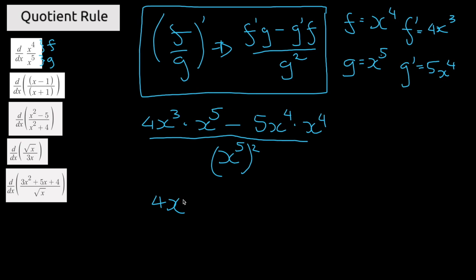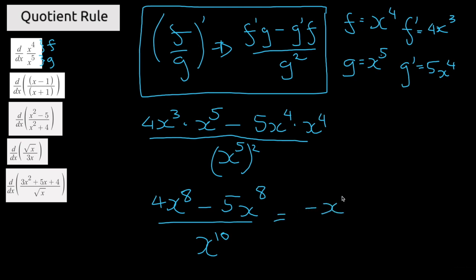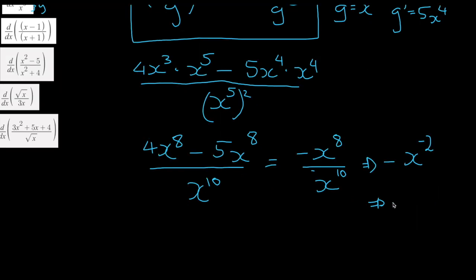This will become 4x to the power of 8 minus 5x to the power of 8, divided by x to the power of 5 squared which will be x to the power of 10. We can simplify this to negative x to the power of 8 divided by x to the power of 10. With 8 minus 10, we're left with negative x to the power of negative 2, and rearranging this gives negative 1 over x squared — that is the final solution.